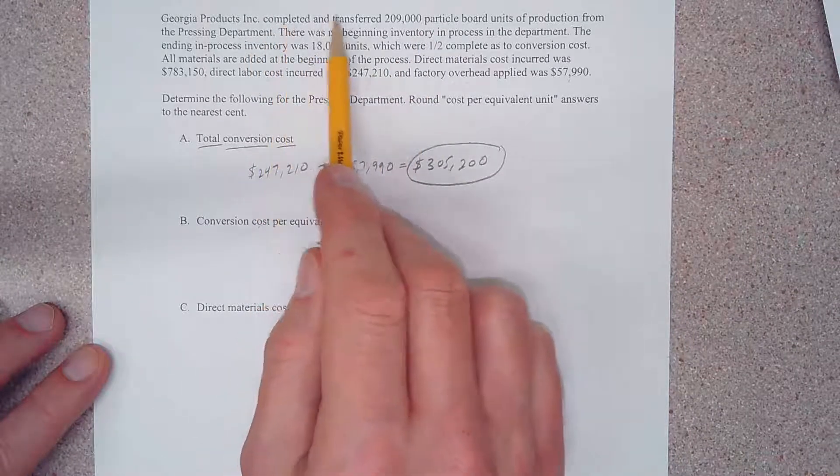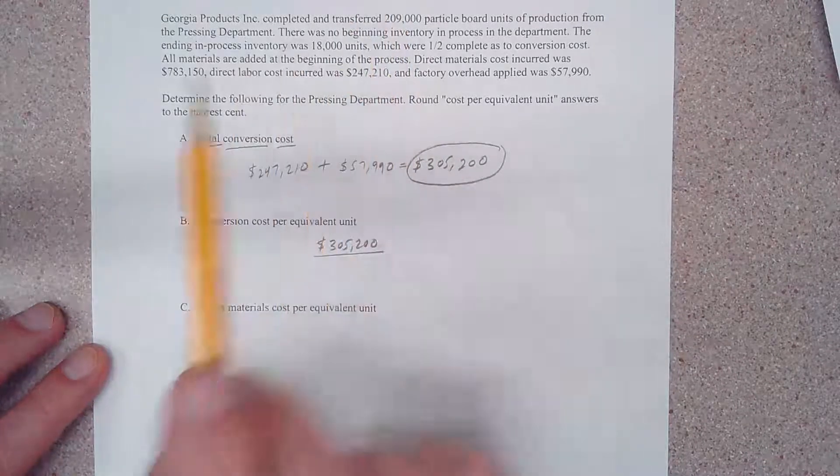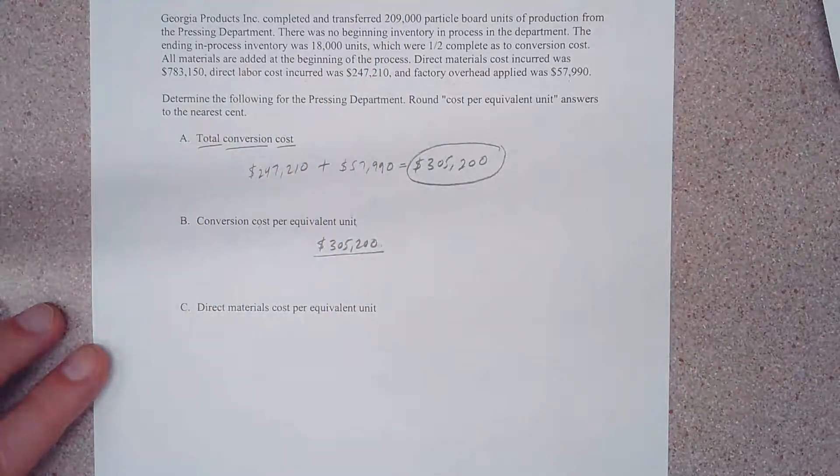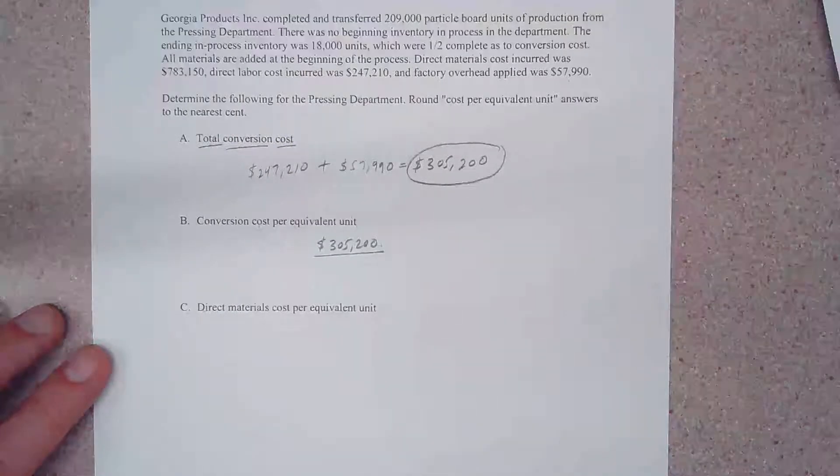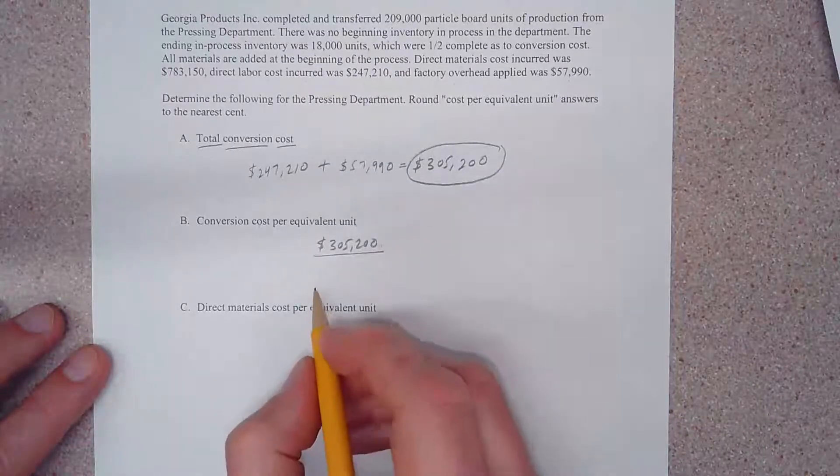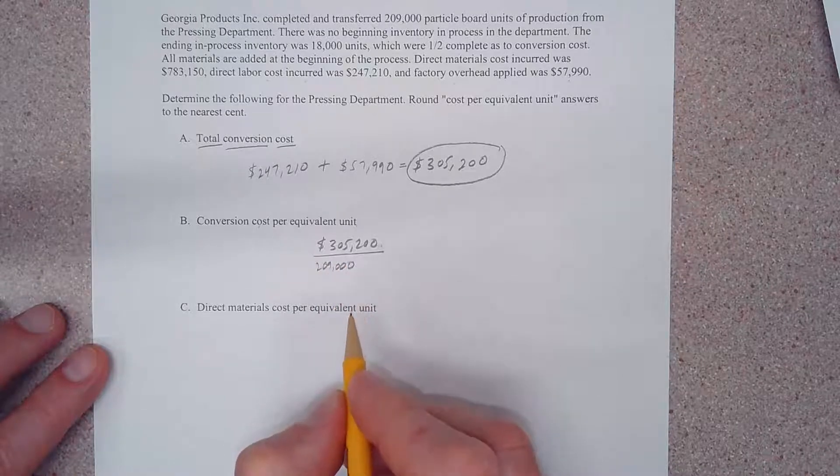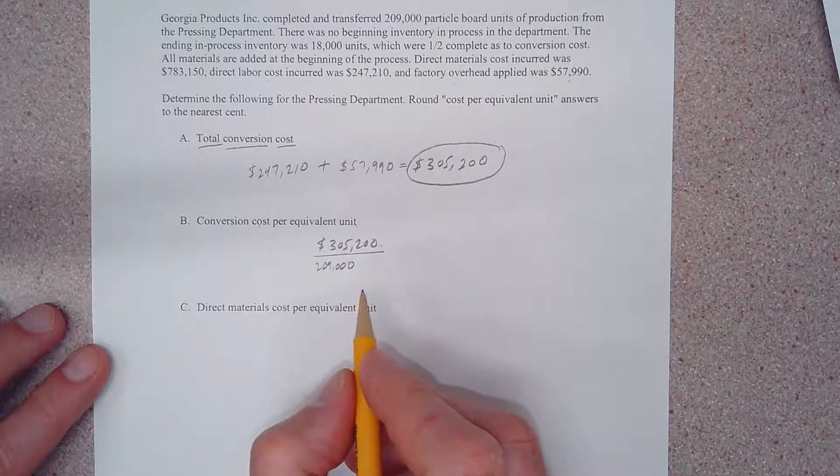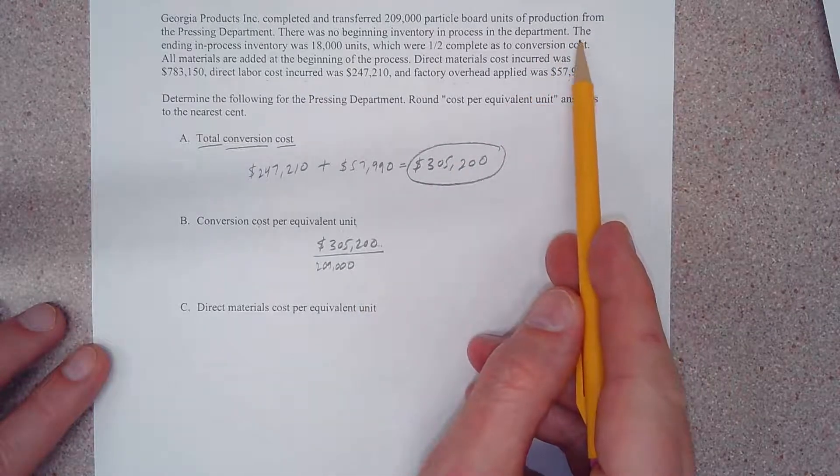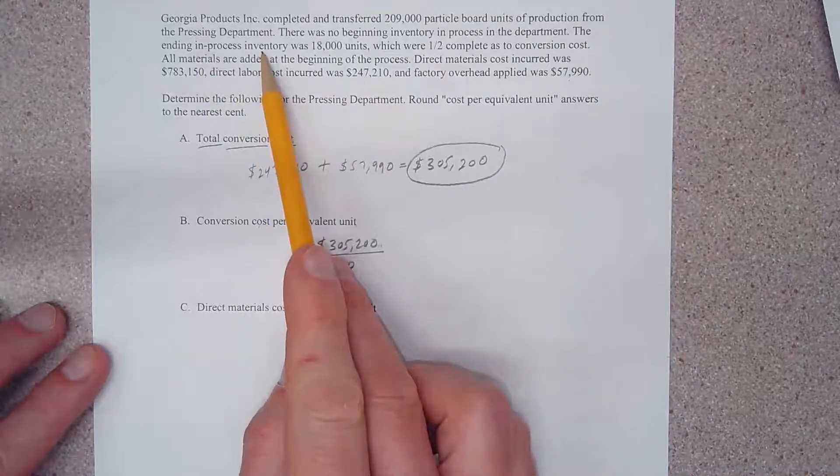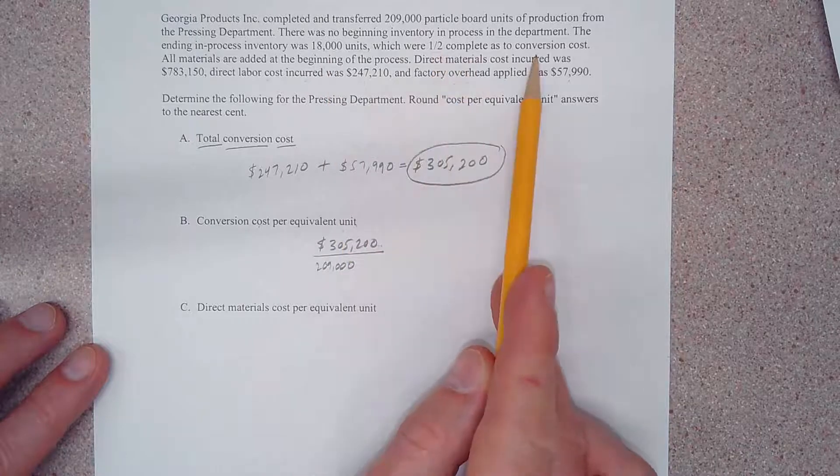...that completed and transferred units are 209,000. So these 209,000 units are fully complete in every way: materials, conversion cost, whatever the case may be. So we have 209,000 as part of our denominator. But wait, it also says here the ending in process inventory was 18,000 units which were half complete as to conversion cost.